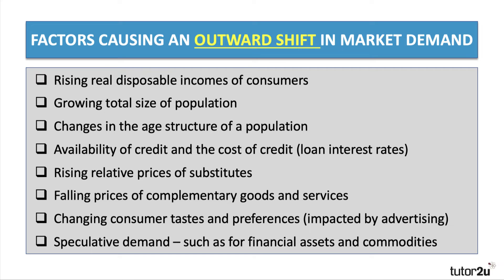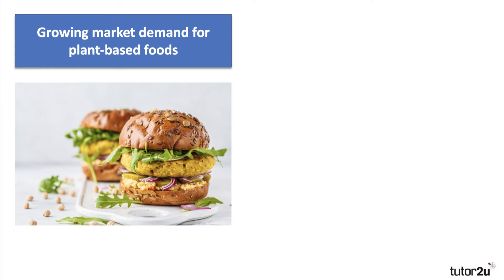It could also be the case that complementary goods and services are going down in price, which might increase market demand for related goods and services. Demand is also affected by changing tastes and preferences, impacted by advertising and other influential factors. There are also speculative aspects to demand, particularly for financial assets and commodities — if people expect future price increases for a commodity like silver or copper, they may be tempted to buy now, adding to current demand.